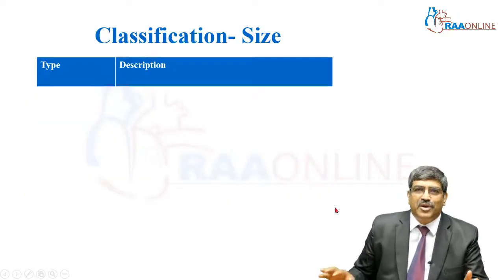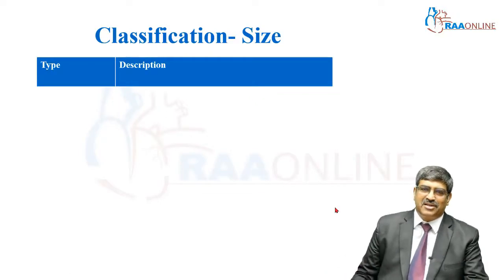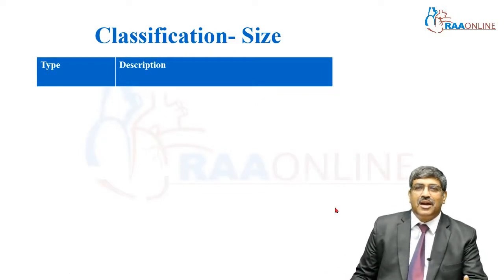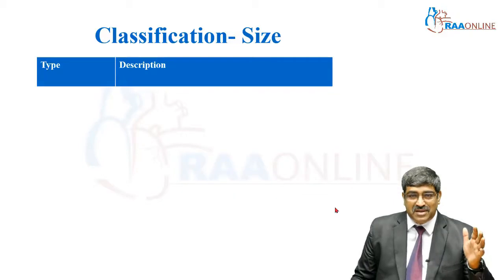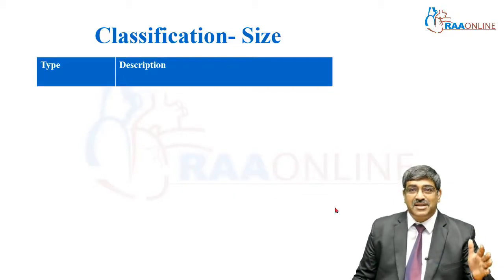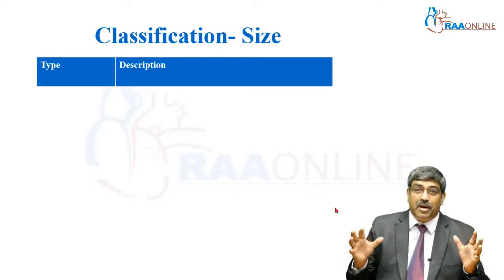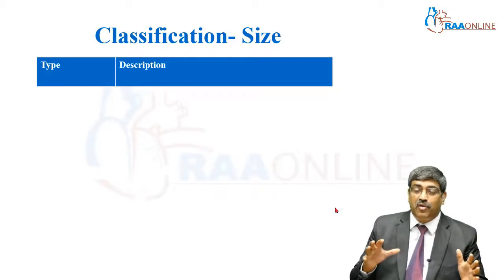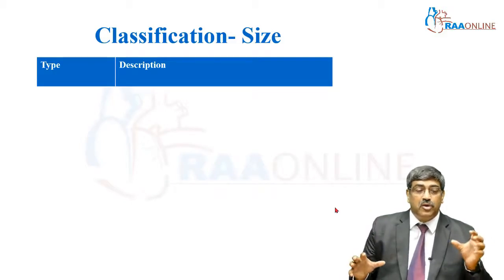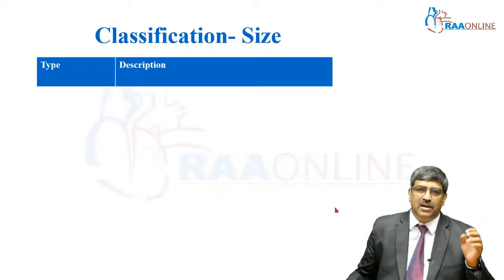Now coming to the classification of patent ductus arteriosus. PDA can be classified by size, shape, hemodynamics, and depending upon the amount of pulmonary blood flow and the luminal size.